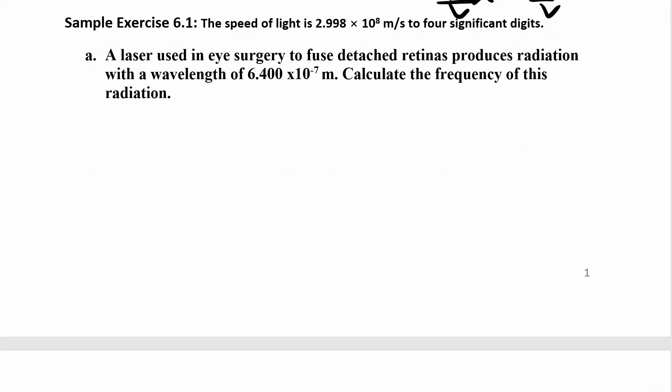So let's see how we can apply this. You have a laser using eye surgery that produces a wavelength right here. Calculate the frequency of this radiation. So wavelength is lambda. They're giving us lambda. They're saying lambda is 6.400 times 10 to the negative 7 meters.